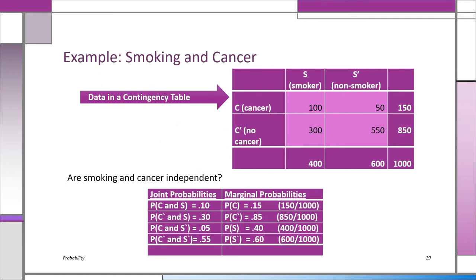This is called a contingency table. We have smoker (S) and non-smoker (S prime), and died of cancer (C) versus didn't die of cancer (C prime). There are 1,000 people in total. Note these are not probabilities — probabilities go from 0 to 1. We're looking at frequencies. If you divide all the numbers by 1,000 — the sample size — you'll have probabilities. You can add up rows or columns; they'll add up to 1,000.